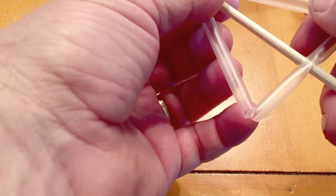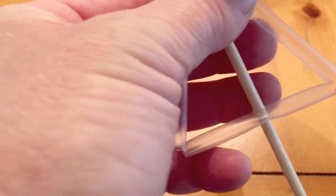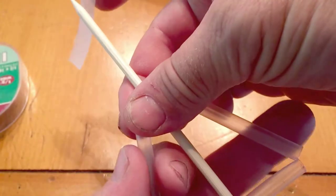And then now you're gonna take some scotch tape or some kind of tape and tape those two ends to the skewer itself.